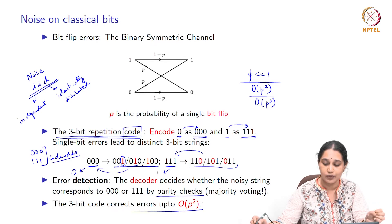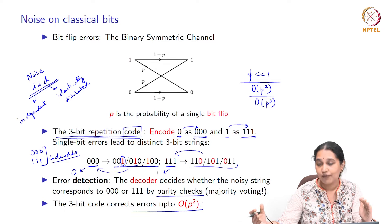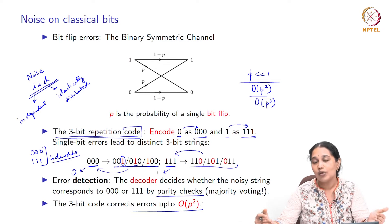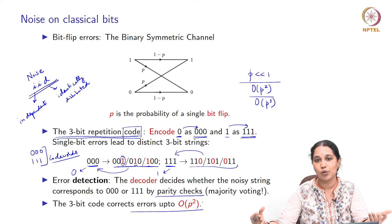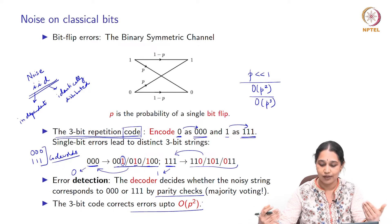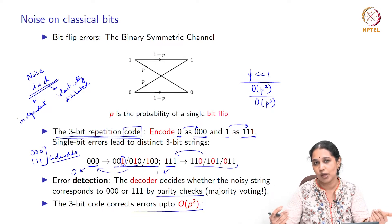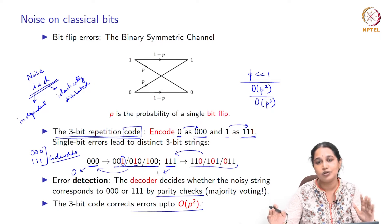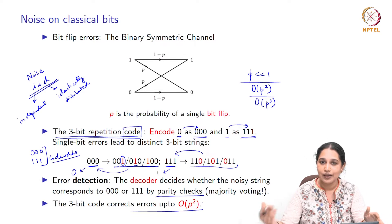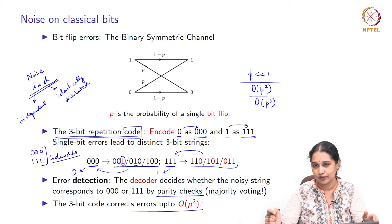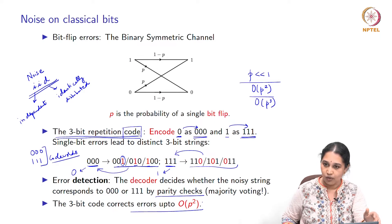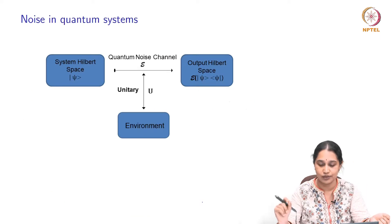In the classical case, we note that we can have either bit flip errors or erasures, and these are the two main noise models that we have to consider and correct for. Fundamentally there are these two noise models: the bit flip and the erasure. Now when we come to the quantum case, we will see that the situation is somewhat different. With this background motivation, we will now move on to talking about noise in quantum systems.